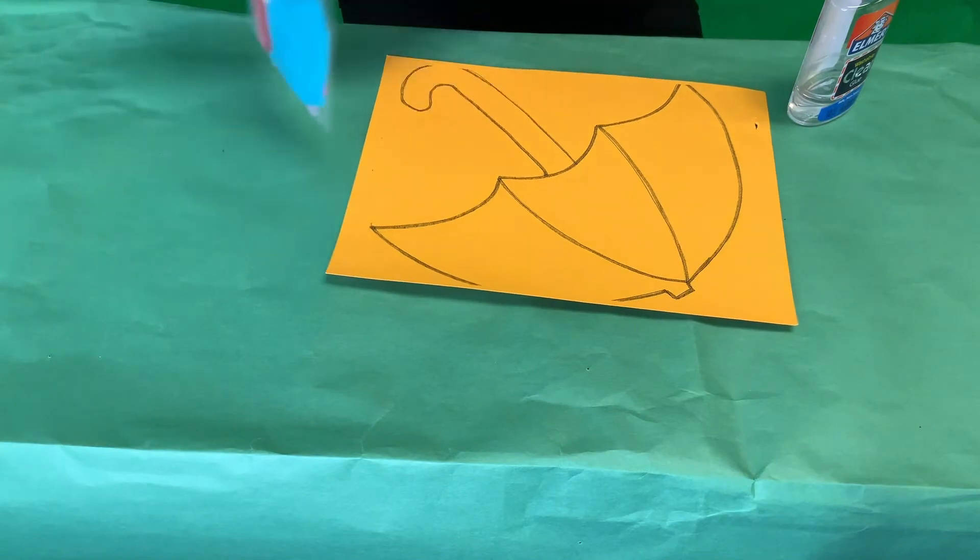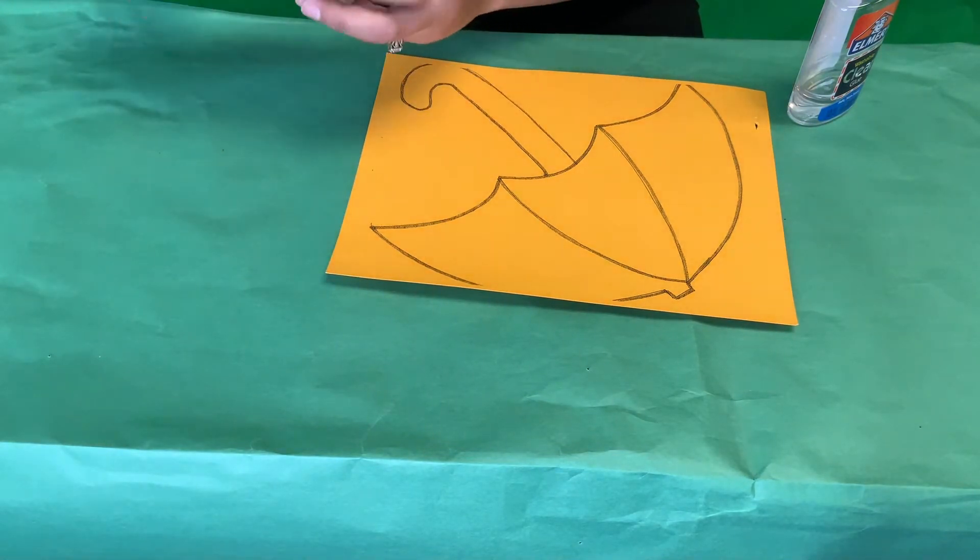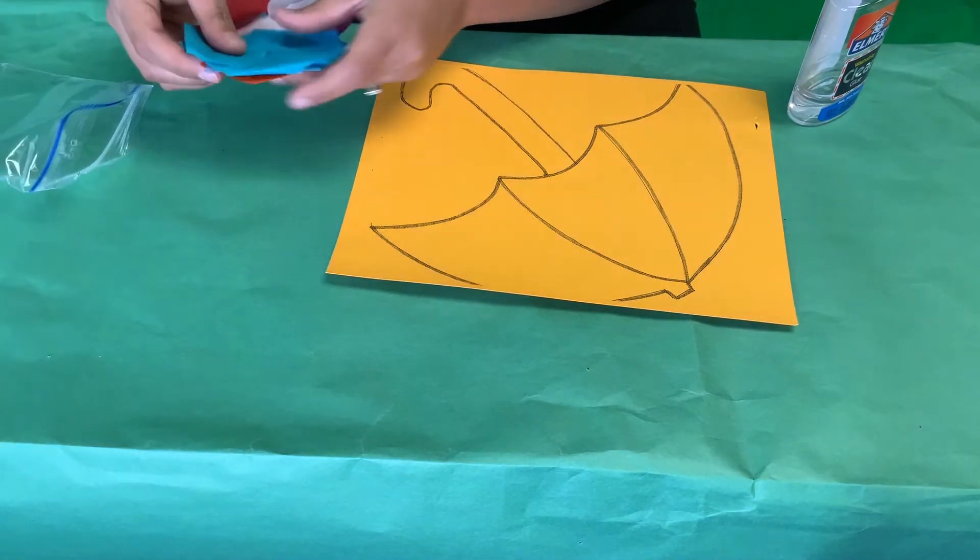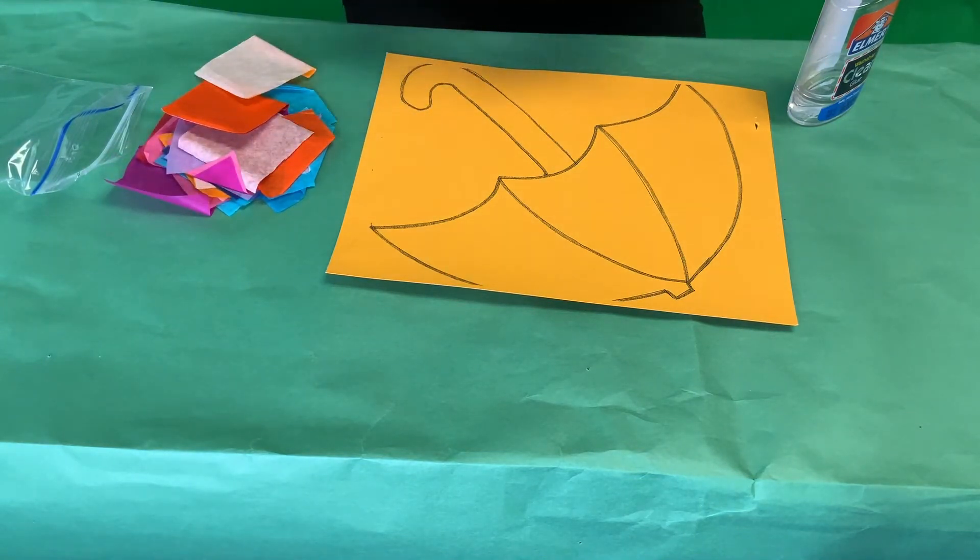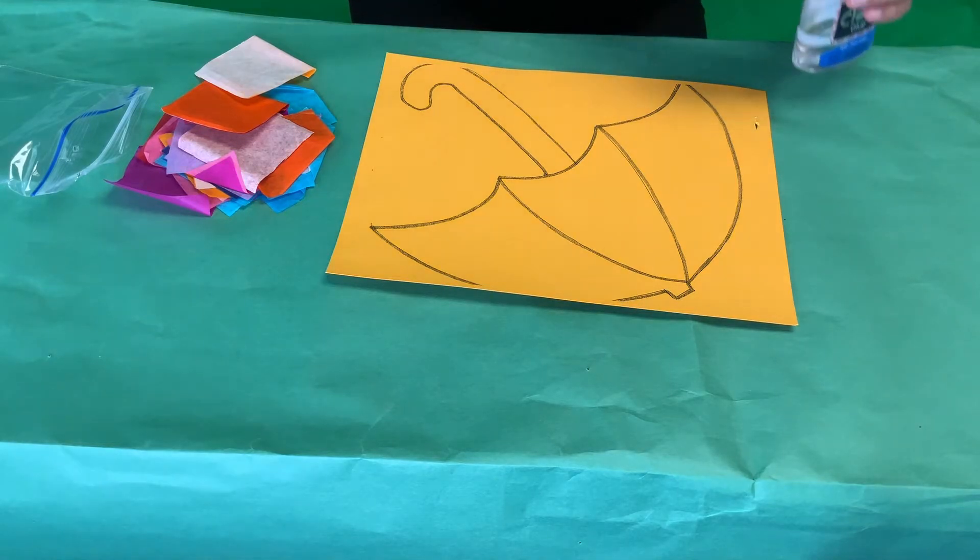you're going to take out your tissue paper. Just take it out next to you and I need you to just grab one at a time and make it into little balls and then we're going to grab our glue and we're going to glue it.